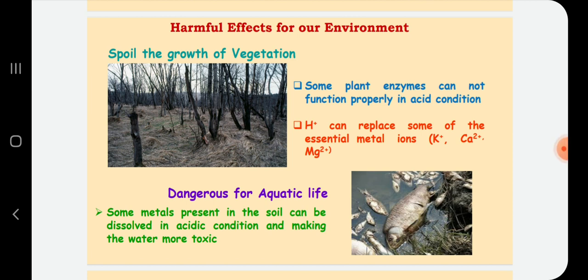Now, why is this acid rain harmful for our environment? As I told you earlier, during acid rain, the acidity of rain water changes drastically by increasing roughly about 1000 times than common rain water which spoils the growth of vegetation. Some plant enzymes cannot function properly in this high acidic condition. Excess of acidity in the soil is also dangerous for living things. Excess of acidity means increase in H plus ion concentration. And these H plus ions can replace some of the essential metal ions such as calcium plus 2, magnesium plus 2, potassium plus which are helpful for growth of the plants.